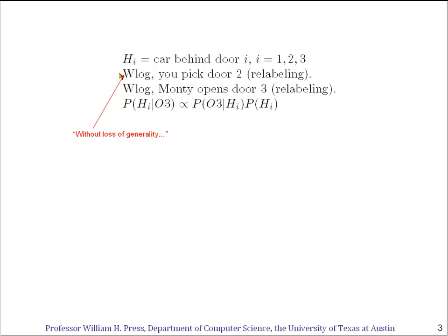How can I say that? Imagine that the numbers haven't yet been put on the doors, but after you point to whichever door you point to, somebody goes up with a piece of chalk and writes a 2 on it — and from now on that's going to be called door 2.